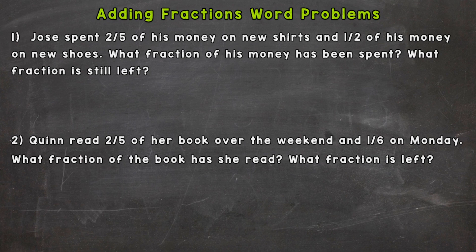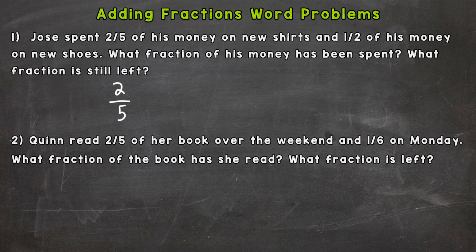Number one: Jose spent two-fifths of his money on new shirts and one-half of his money on new shoes. What fraction of his money has been spent and what fraction is still left? So let's take the information from the problem — we have two-fifths on shirts and we're combining that with how much he spent on shoes, which means we're adding. So: two-fifths plus one-half.